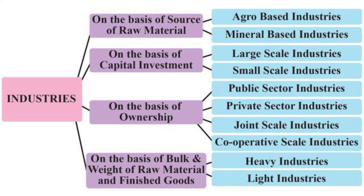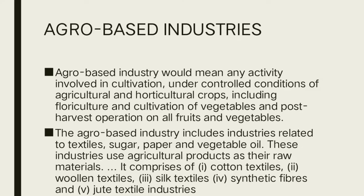Industries are classified on the basis of raw material, capital, ownership, and bulk or heaviness. On the basis of raw material: agro-based and mineral-based. On the basis of capital investment: large scale, small scale, medium scale, and cottage. On the basis of ownership: public sector, private sector, joint sector, and cooperative sector. On the basis of bulk or weight of material: heavy industries, light industries, and agro-based industries. Agro-based industries get their raw material from agriculture and allied activities.